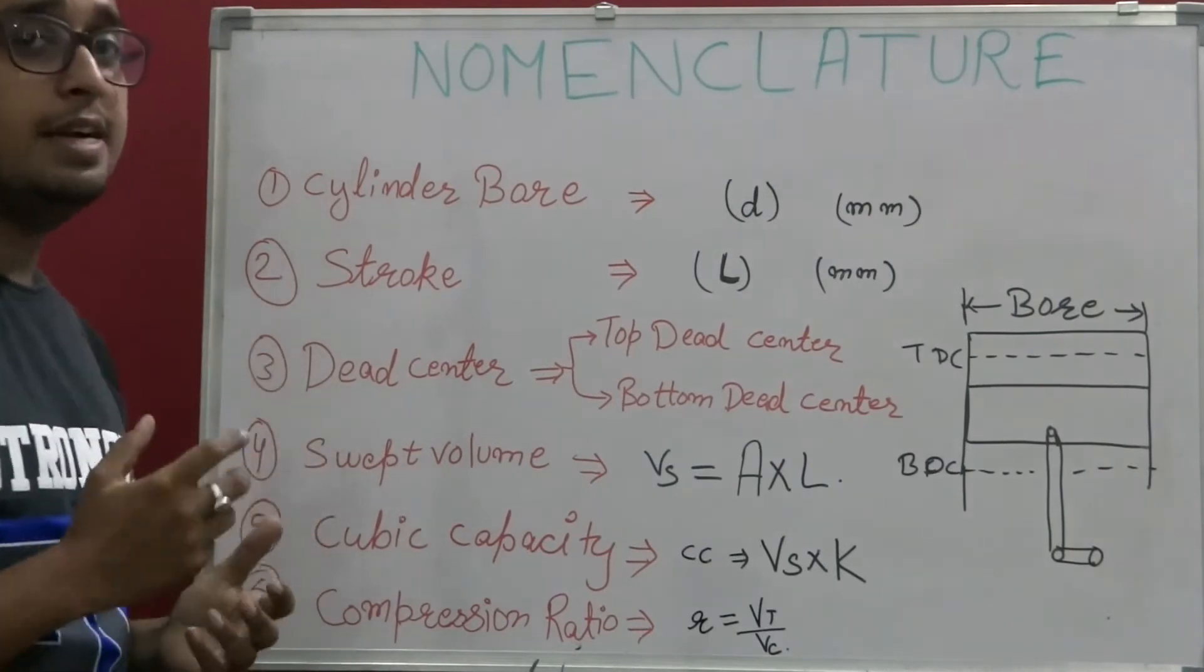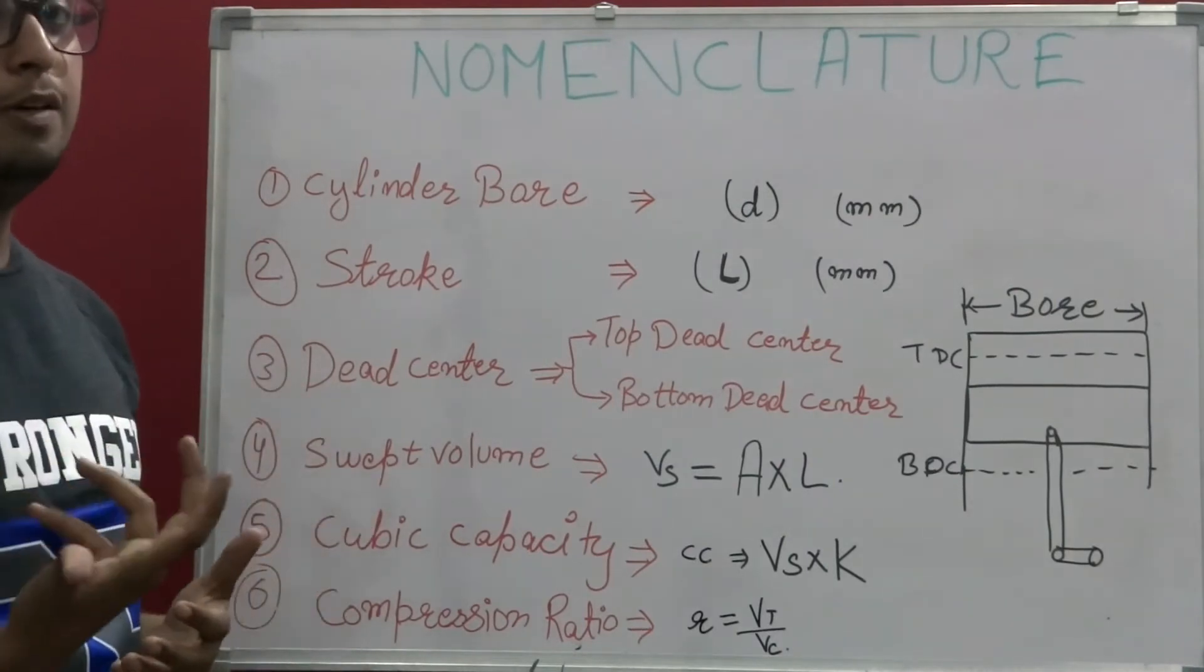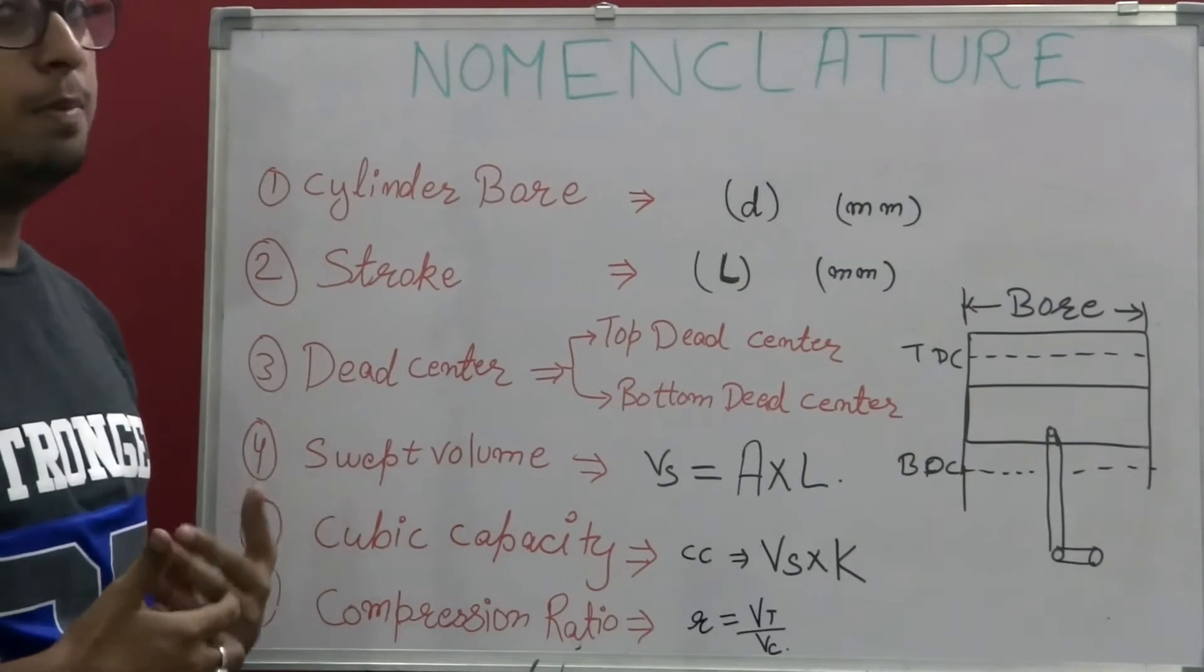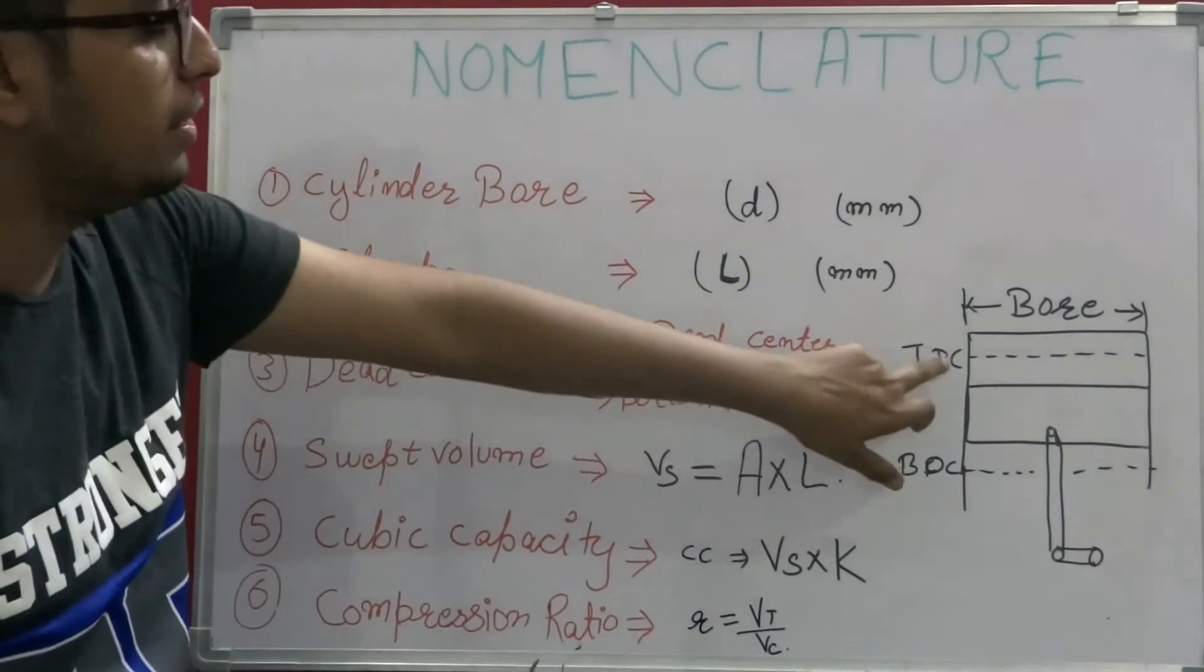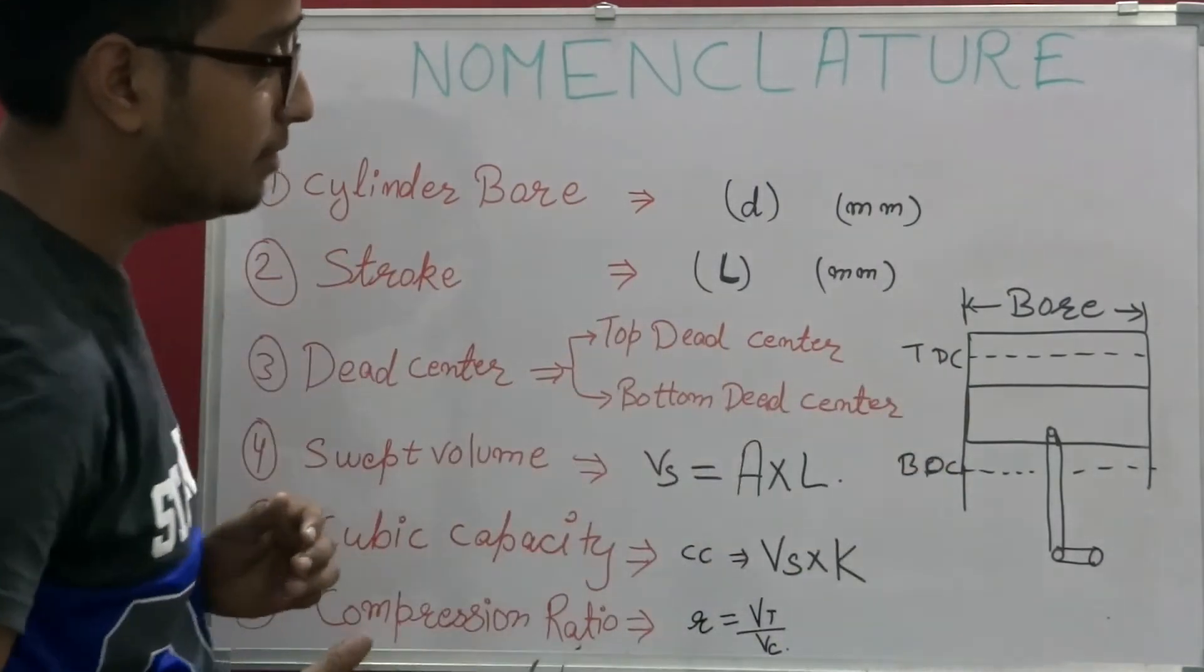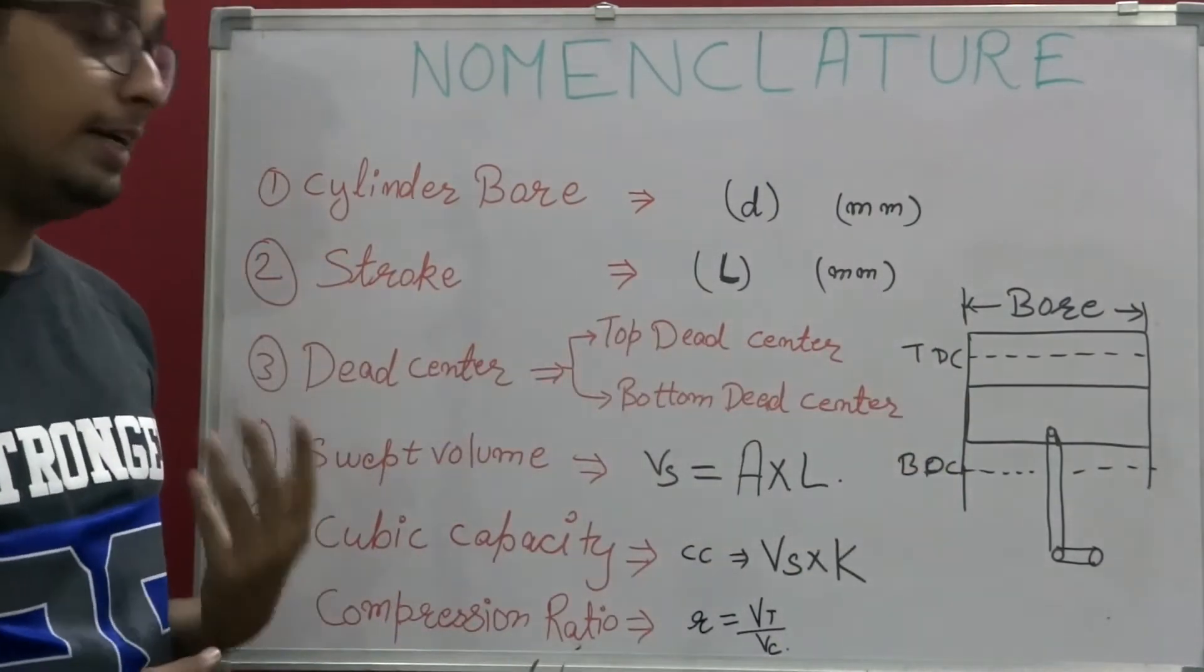After that we have dead center. Dead center is basically the movement of a piston while it is working from one position to another. The movement of a piston is between two lines as you can see over here, TDC or BDC. TDC is top dead center or inner dead center.